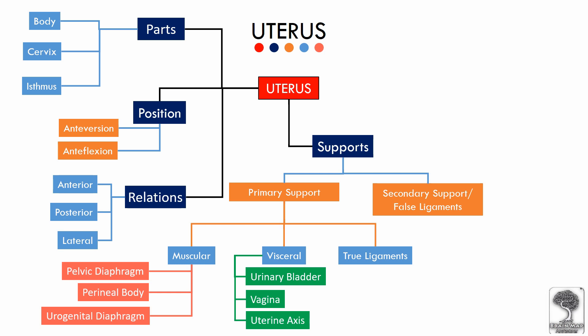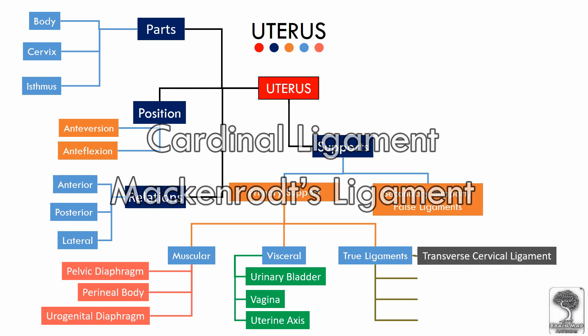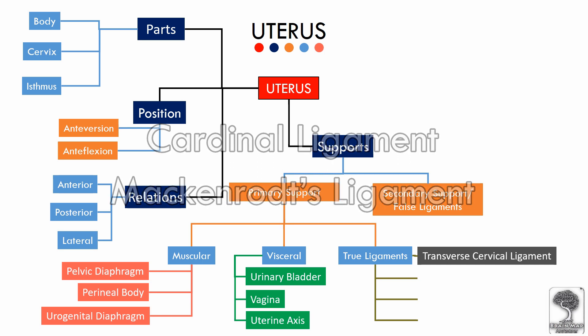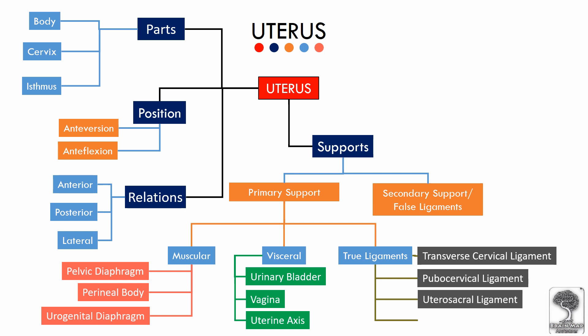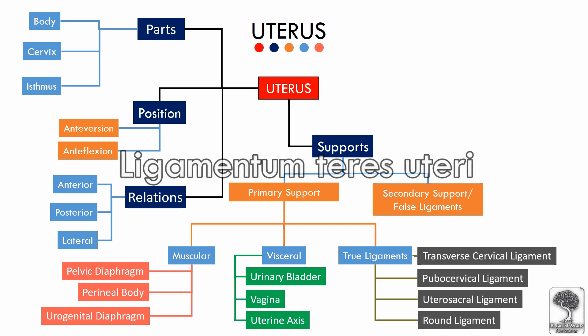The mechanical support to the uterus is given by the fibromuscular true ligaments of the uterus. There are four of these ligaments: the transverse cervical ligament or cardinal ligament, which is the strongest mechanical support, also known as Mackenrodt's ligament; the pubocervical ligament extending anteriorly; the uterosacral ligament extending posteriorly; and the round ligament of the uterus, also known as ligamentum teres uteri.